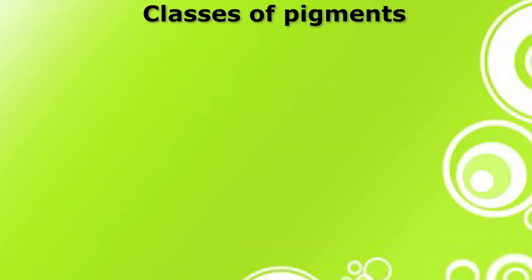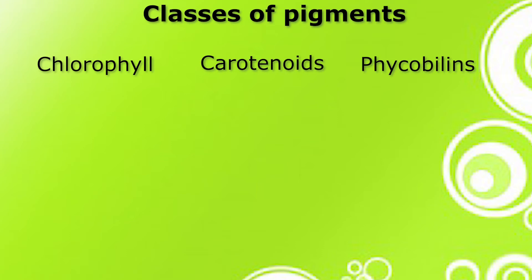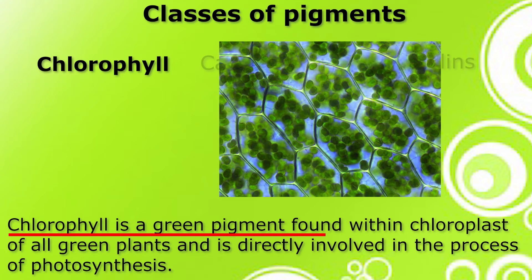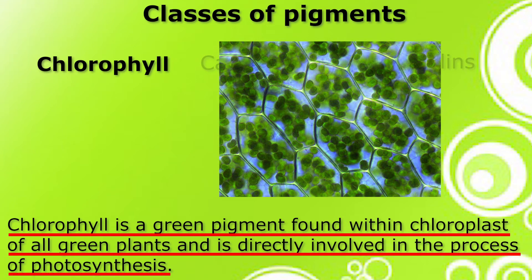Broadly, there are three major classes of pigments: Chlorophyll, Carotenoids, and Phycobilins. Chlorophyll is a green pigment found within the chloroplasts of all green plants and is directly involved in the process of photosynthesis.